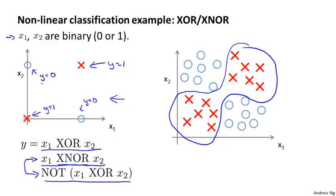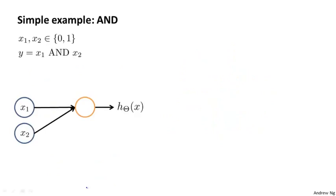In order to build up to a network that fits the XNOR example, we're going to start with a slightly simpler one and show a network that fits the AND function. Concretely, let's say we have inputs x1 and x2 that are again binary, so either 0 or 1. And let's say our target labels y are equal to x1 AND x2. This is a logical AND.